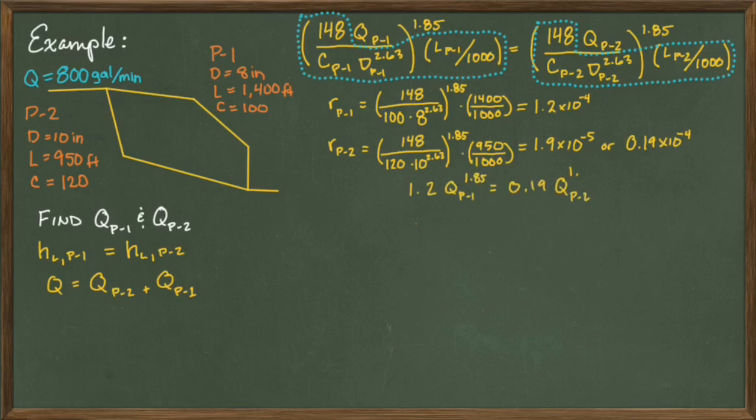We set the two pipes equal to each other to get 1.2 times q in pipe 1 to the 1.85 power, equal to 0.19 times q in pipe 2 to the 1.85 power. Solving for the flow rate in pipe 1, we get that equal to 1.85 root of 0.19 divided by 1.2 times the flow rate in pipe 2. And that gets us Qp1 equal to 0.37 times Qp2.